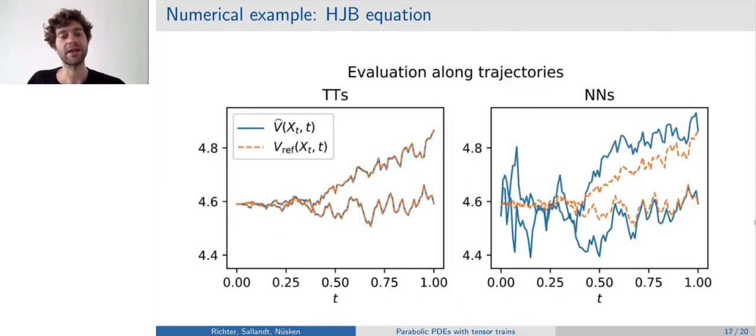Here you can see the approximated solution compared to the reference solution evaluated along trajectories of the forward process. On the left-hand side, you see the tensor-train version, which almost fits the solution perfectly. And on the right-hand side, you see the neural networks, which are a little bit worse in this case.